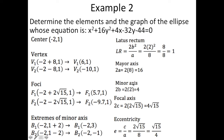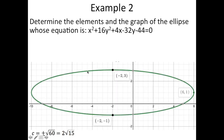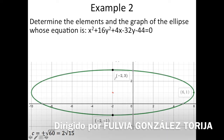To graph this, start with the center at (−2, 1). Since a = 8, you move 8 units to the right and 8 units to the left to find the vertices. For the co-vertices, you add and subtract b = 2 from the y value of the center, moving 2 units up and 2 units down.